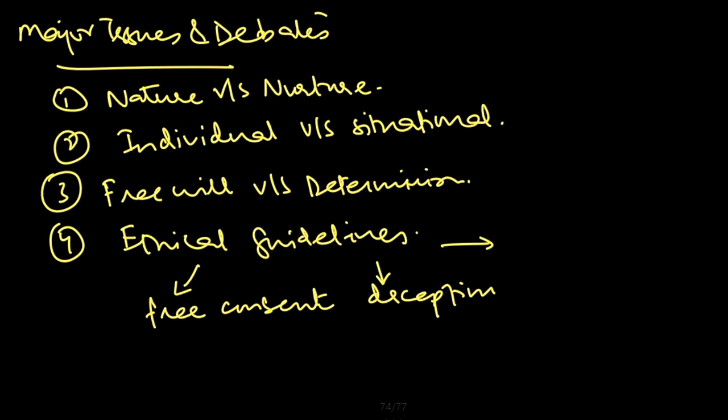So these four are the main points in the major issues and debates: nature versus nurture, individual and situational, and ethical guidelines. Well, ethical guidelines are important and they are part of every study. And similarly, some studies are nature-based, some are nurture-based.